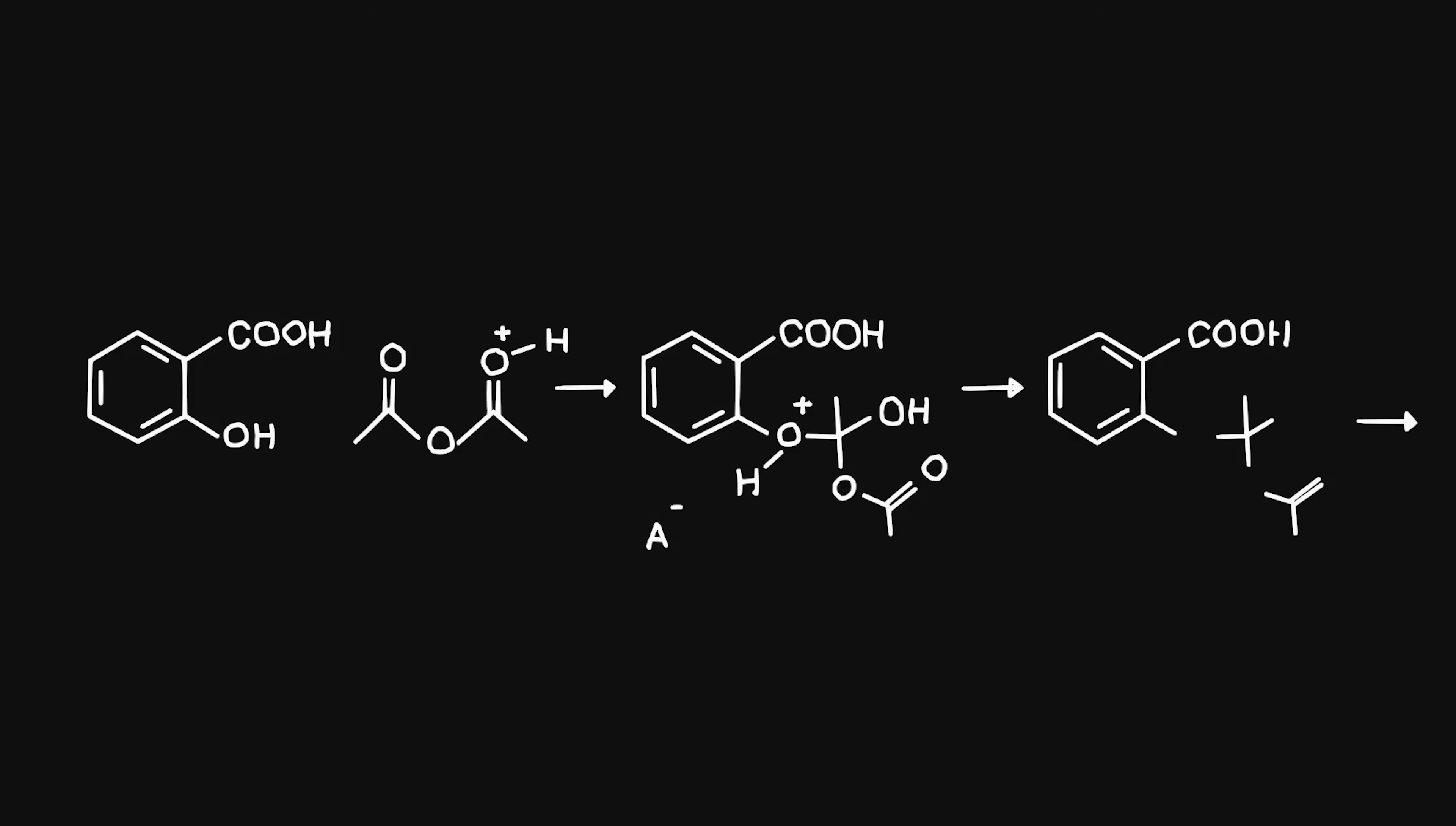One of the carbonyls on acetic anhydride is protonated by an H-positive proton, which happens in the presence of an acid and increases the electrophilic character of the carbonyl carbon. The hydroxyl group of the salicylic acid acts as the nucleophile to attack the carbonyl group of the acetic anhydride and replace one of the acetyl groups forming a tetrahedral intermediate.